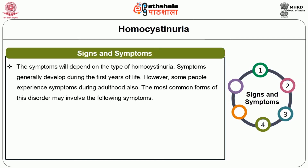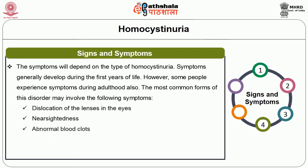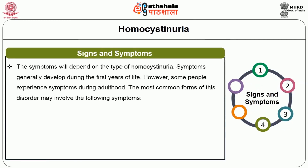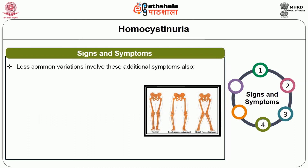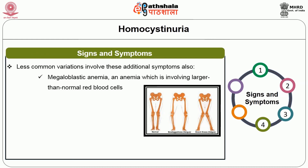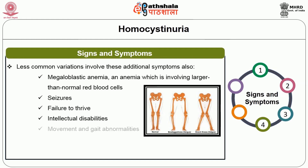The symptoms of homocystinuria depend on the type and generally develop during the first years of life, though some people experience symptoms during adulthood. The most common form may involve dislocation of the lenses in the eyes, nearsightedness, abnormal blood clots, osteoporosis, learning disabilities, developmental problems, chest deformities, long spindly arms and legs, and scoliosis. Less common variations also involve megaloblastic anemia, seizures, failure to thrive, intellectual disabilities, and movement and gait abnormalities.